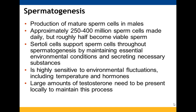Spermatogenesis is the production of mature sperm cells in males. Approximately 250 to 400 million sperm cells are made daily, but only half of those actually become viable sperm. Sertoli cells help to support sperm cells through spermatogenesis by helping to maintain the environmental conditions the sperm need and secreting substances needed for their development. This process is very sensitive to environmental fluctuations such as hormones and temperature, and we need lots of testosterone to maintain it.